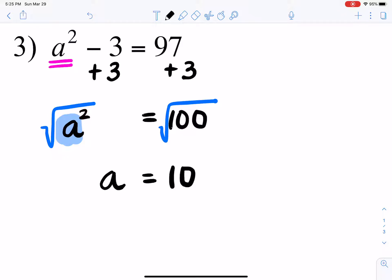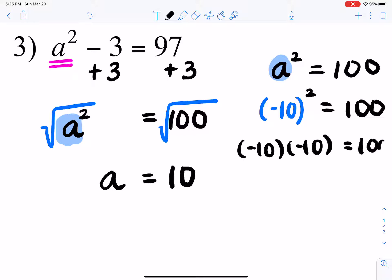So if you're thinking negative 10, you're correct. Because if we substitute negative 10 to a, it will be negative 10 squared, which equals 100. Negative 10 times negative 10 is, in fact, 100.